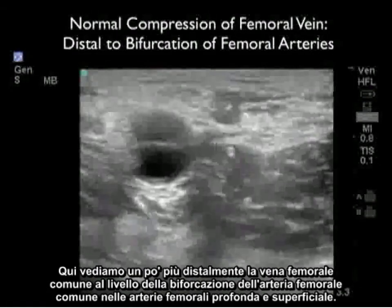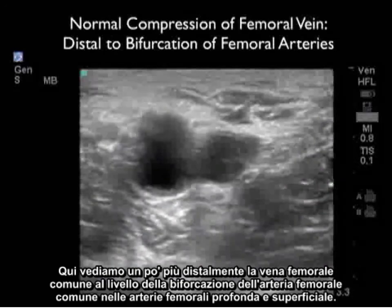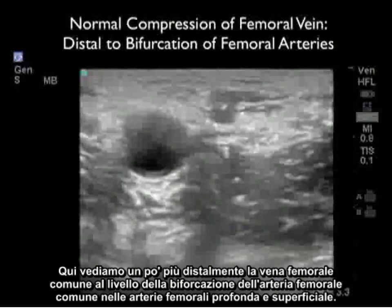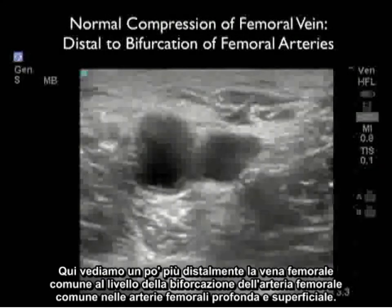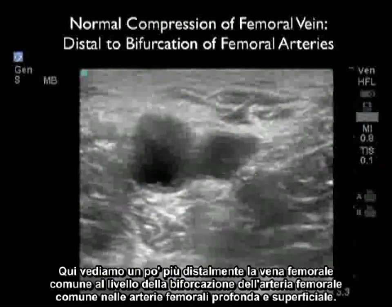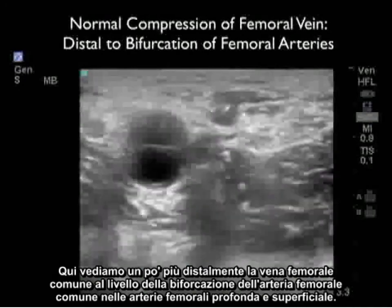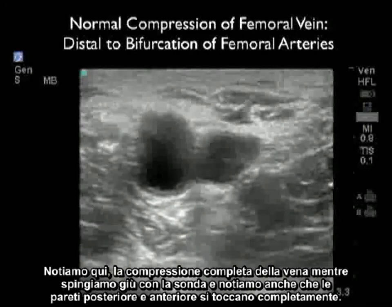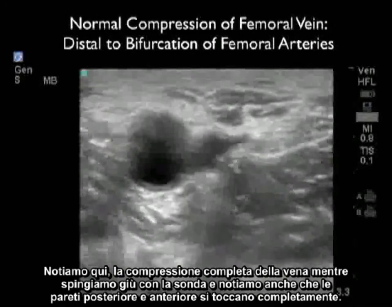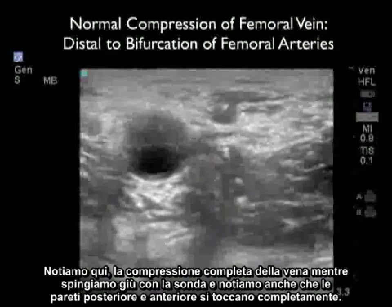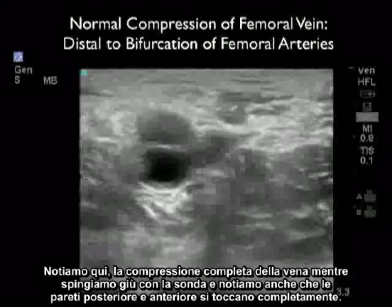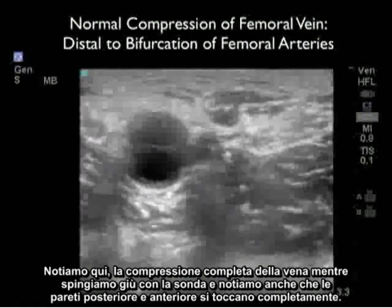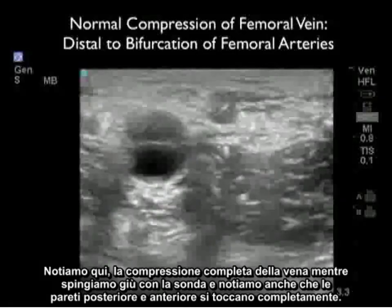Here we're looking a little bit more distally at the common femoral vein at the level of the bifurcation of the common femoral artery into superficial and profundus femoral arteries. We note here complete compression of the vein as we push down with the probe, with the anterior and posterior walls completely meeting together.